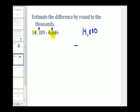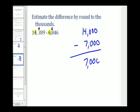And 6,846, this eight tells us to round up, so this would round to 7,000. Well 14,000 minus 7,000 would be 7,000, which would be an estimation for this difference.